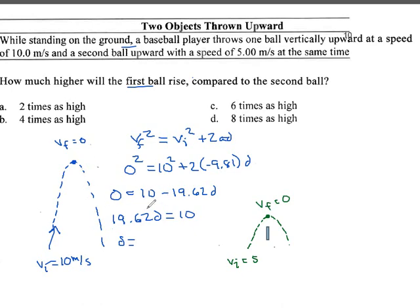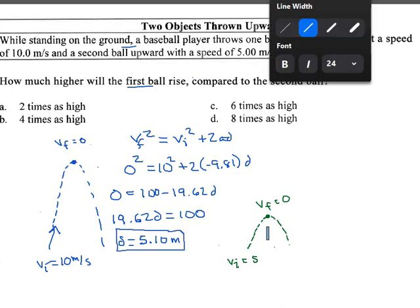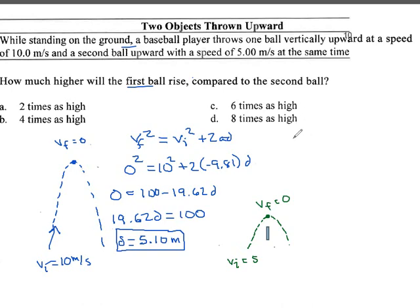I just got 0.5 of a meter and thought that's crazy, that ball should be going much higher. I wrote 10 squared and then forgot to do the squaring part. This is 100. Now it's 19.62 D equals 100. Divide both sides by 19.62, and we get 100 divided by 19.62. It comes out to 5.0968, but when we round that to two digits, we get 5.10. 5.10 meters is the height for the first ball.